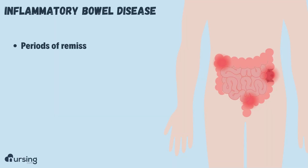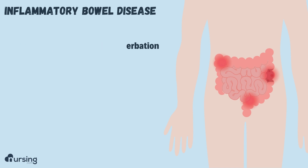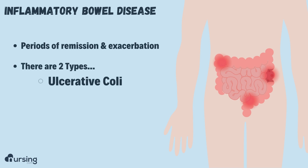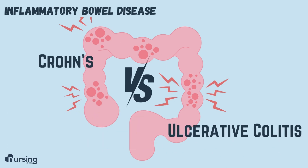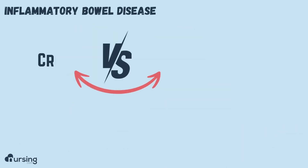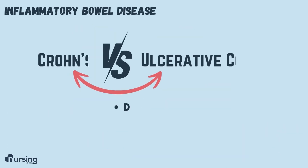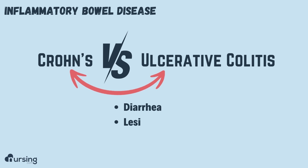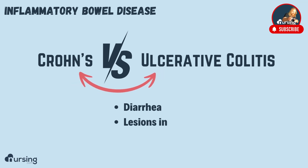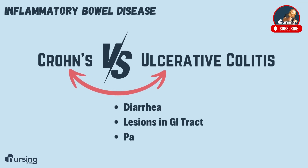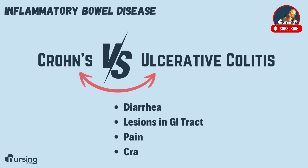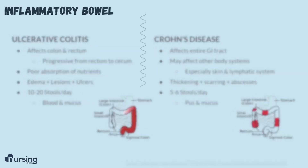Inflammatory bowel diseases tend to go through periods of remission and exacerbation. There are two types: ulcerative colitis and Crohn's disease. They're both going to cause things like diarrhea and lesions in the GI tract, as well as pain and cramping, but there is a way to tell the difference.